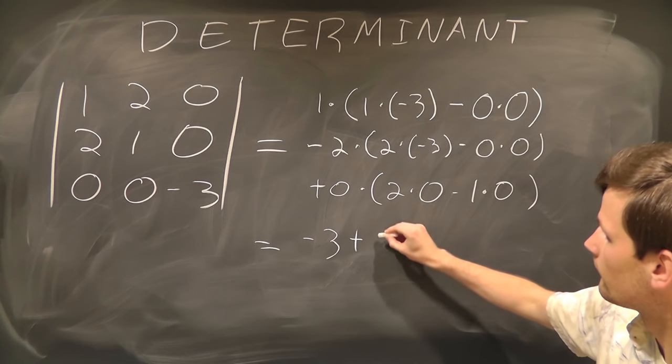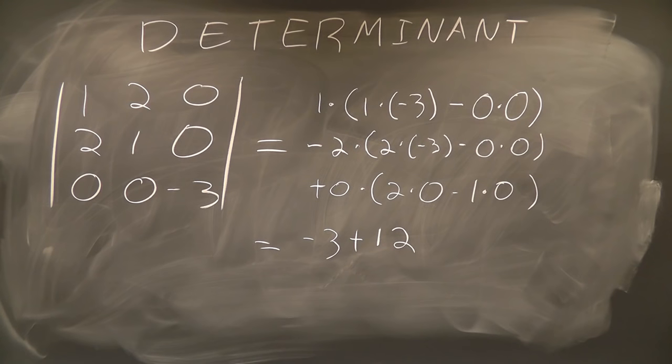Which is equal to negative 3 plus 12, or exactly 9, the same as we saw before.